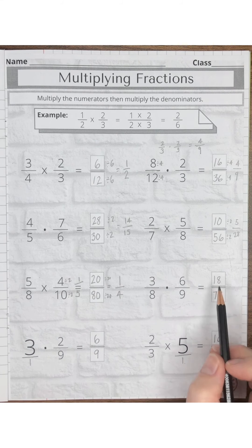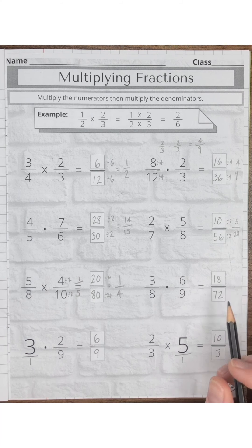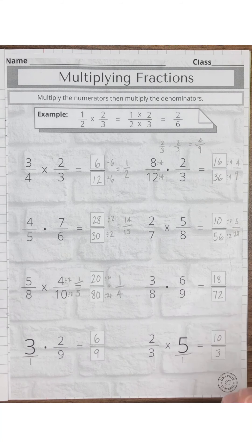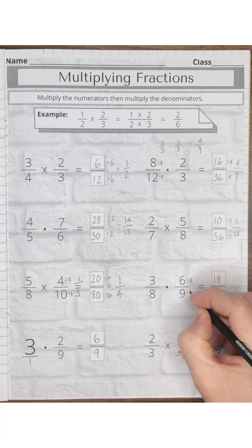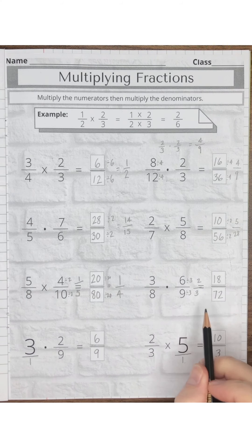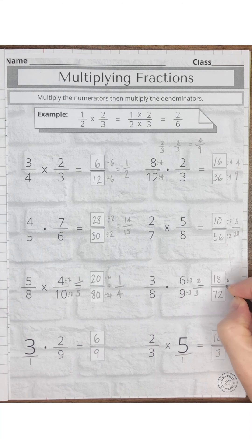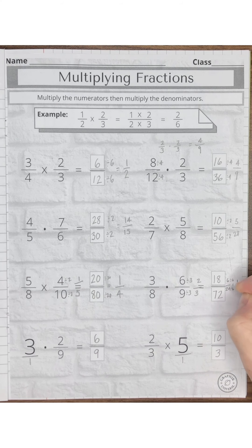Next: 18 over 72 — both have the greatest common factor of 18. But it's better to reduce first. Six-ninths can be reduced to two-thirds. When you multiply, you get six twenty-fourths, which is much easier to reduce. Both have the greatest common factor of 6, which simplifies to one-fourth.